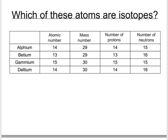Sometimes you're asked to identify isotopes from a table. Now, here's kind of four made up names, alphium, betium, gamium, deltium, they're not really names of elements, but we're given information about their atomic numbers and their mass numbers.